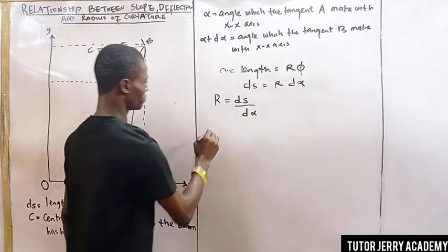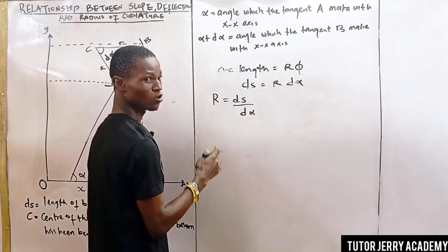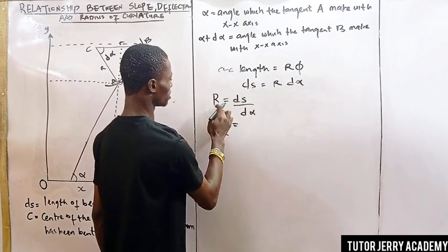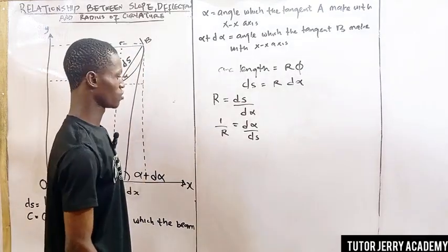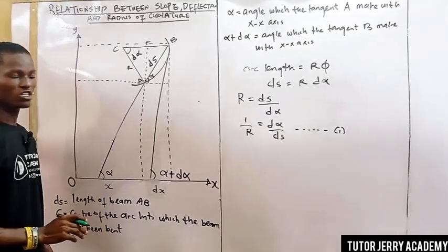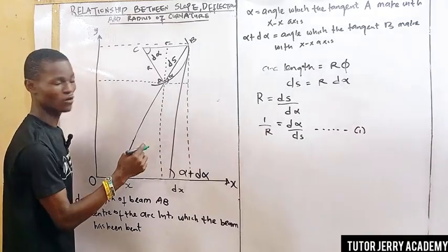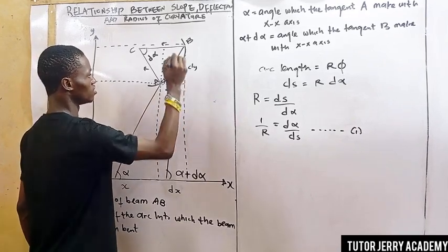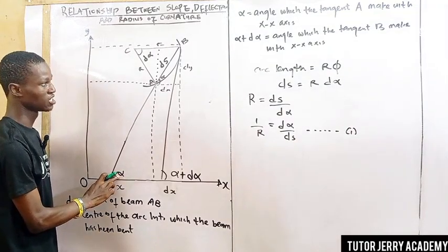Our next step is to find the reciprocal of this equation — turning it upside down — so we have one over R equals alpha over ds. We can call this equation one. Understand that what we are doing is in the x-y plane, which means if we take the relationship of this, it will be in x and y coordinates.